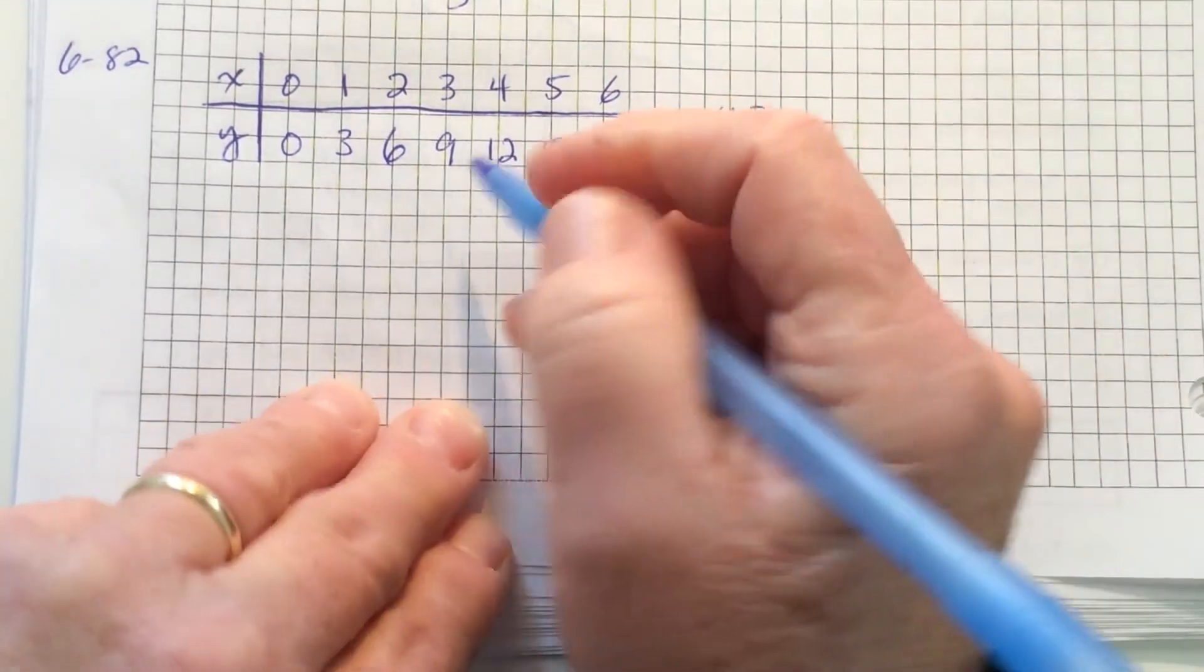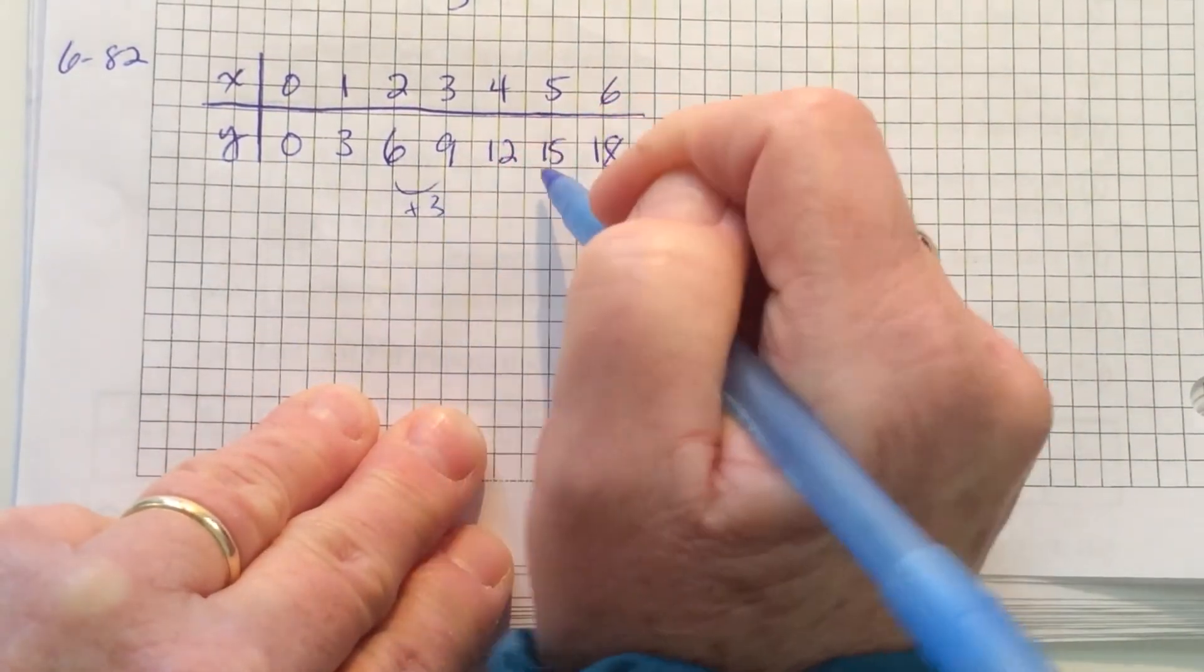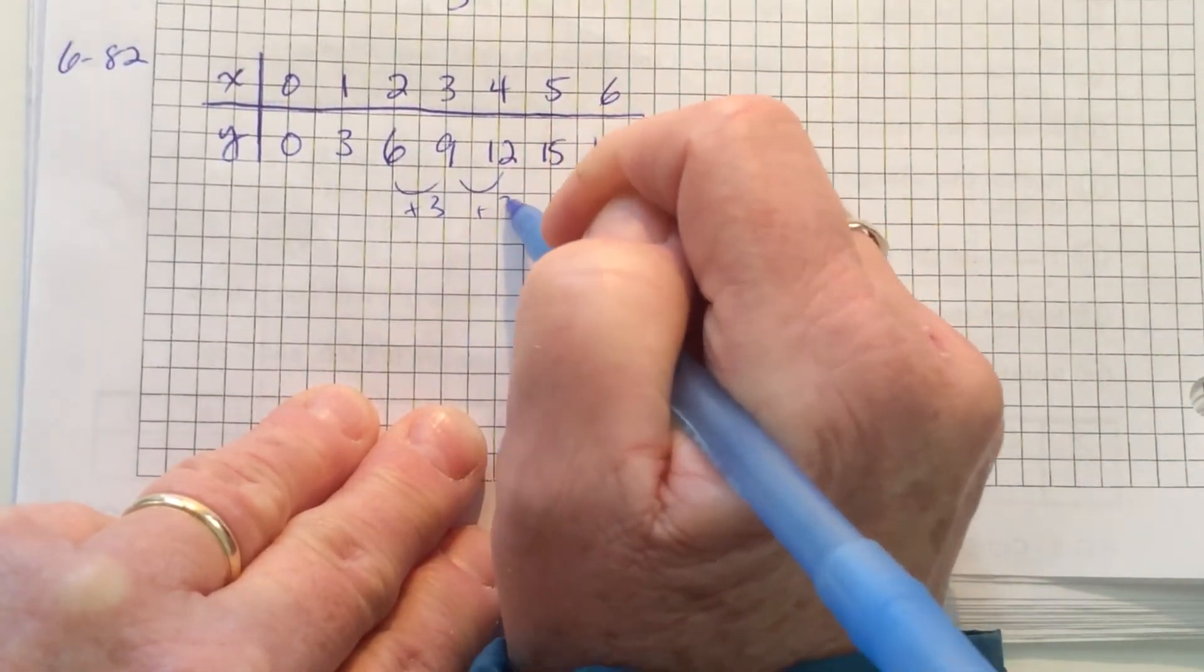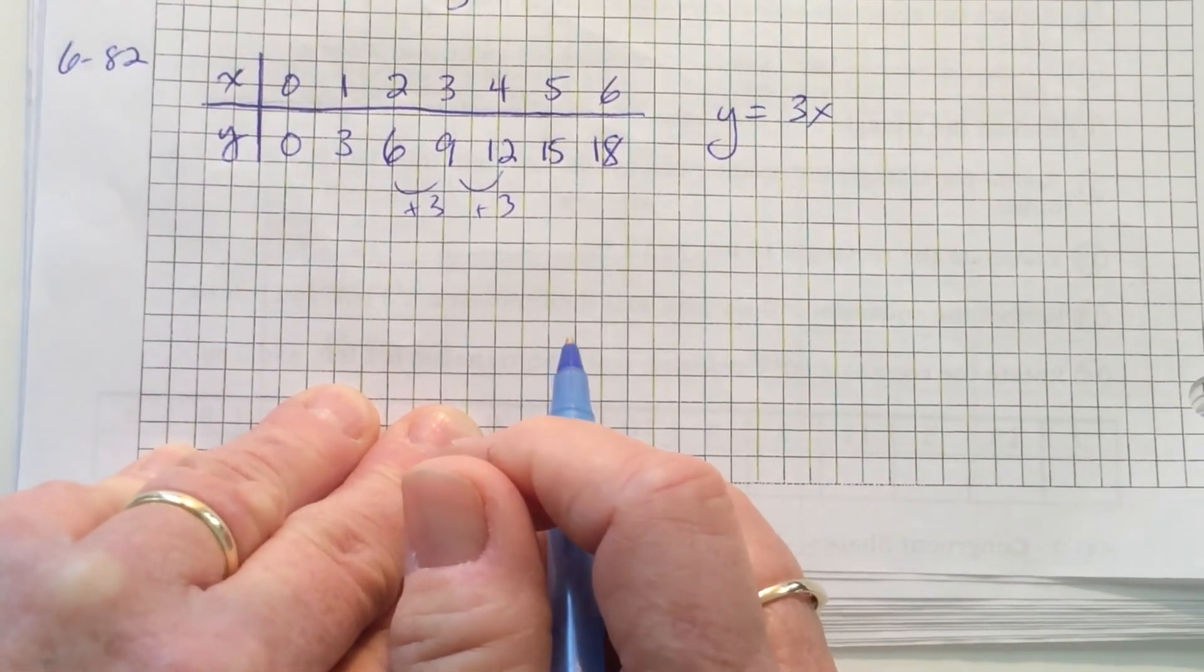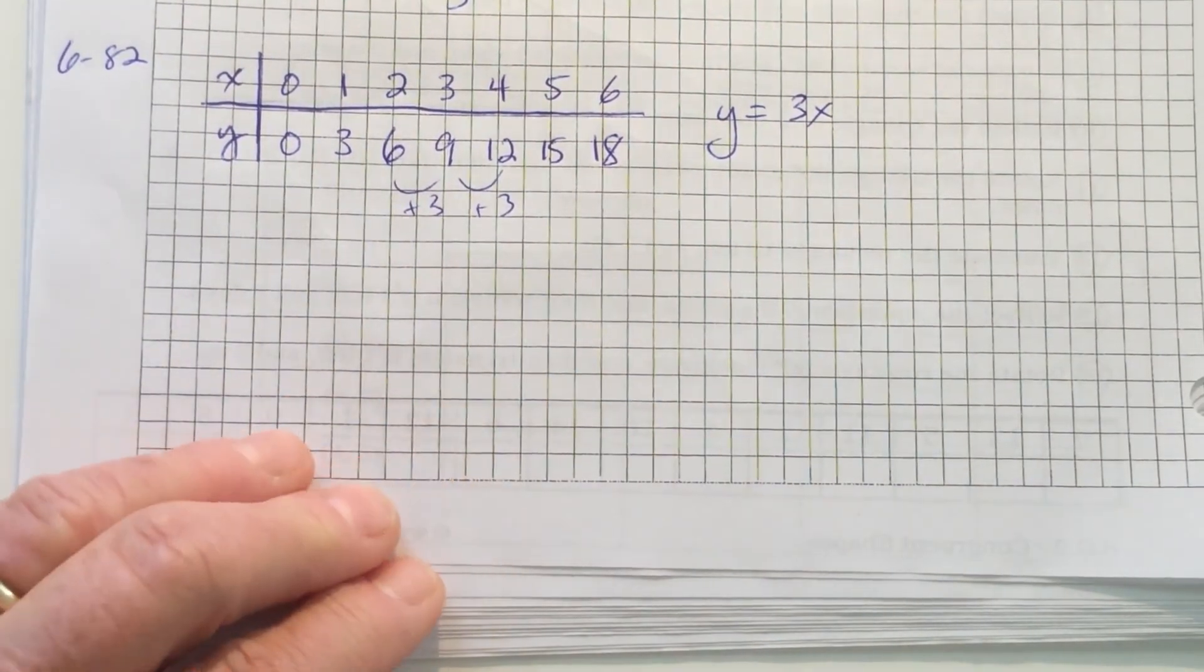So the equation is 3x plus 0, or just 3x.